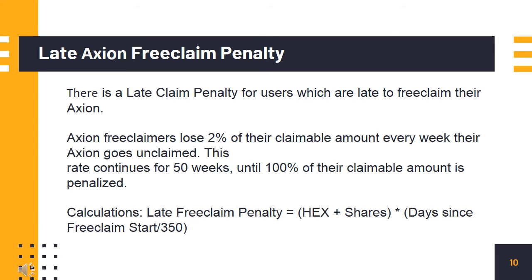Late Axion free claim penalty: There is a late claim penalty for users who are late to free claim their Axion. Free claimers lose 2% of their claimable amount every week their Axion goes unclaimed. This rate continues for 50 weeks, until 100% of their claimable amount is penalized. The late free claim penalty equals HEX shares multiplied by days since free claim start, divided by 350.